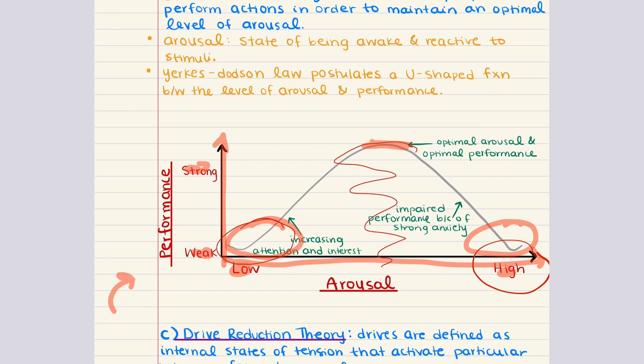The optimal level of arousal varies between different types of tasks. Lower levels are optimal for highly cognitive tasks, while higher levels are optimal for activities that require physical endurance and stamina. In summary, arousal theory states that people perform actions in order to maintain an optimal level of arousal.